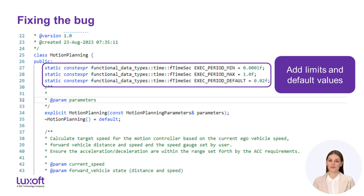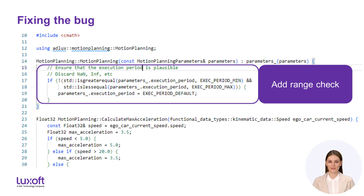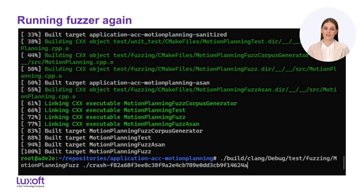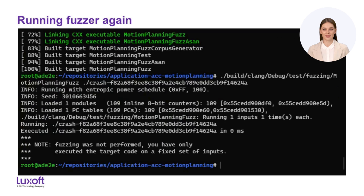We apply principles of defensive programming and make a plausibility check of input parameters. For instance, we can define a sensible range for the execution period — of course we have to ensure that our software requirements are satisfied. Subsequently we can add a check whether the value is within that range and set the execution period to its default value otherwise. Having applied the fix, we now rebuild the software component and the fuzz target. We run the fuzz target providing the previously saved crash data as input — in this mode the fuzzer does not perform any fuzzing but only calls the fuzz target once. As we can see, there is no error output this time, so the bug is fixed.